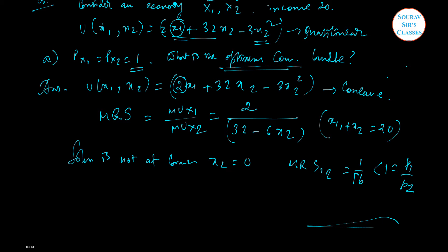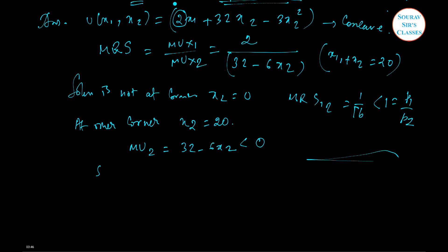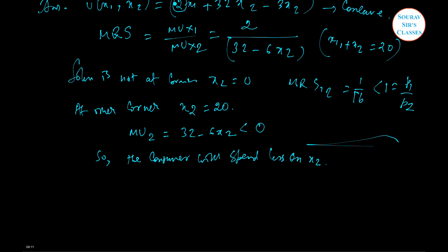The solution is also not at the other corner, x2 equal to 20, because at that point the marginal utility — which is 32 minus 6x2 — would be less than 0, so it is beneficial to spend less on x2. Therefore the solution is in the interior and satisfies MRS equal to the price ratio.